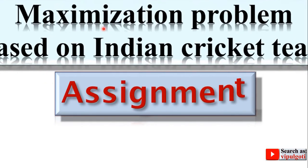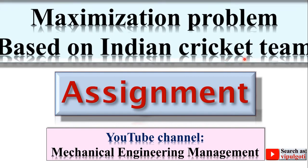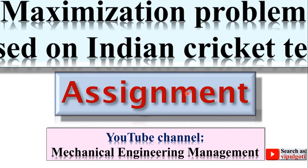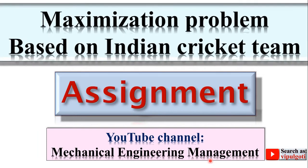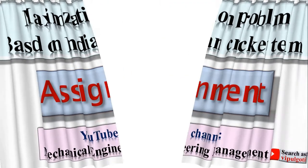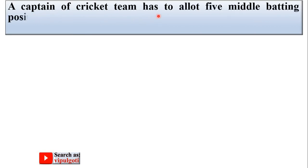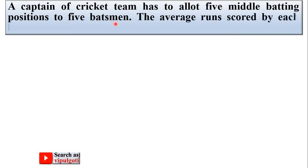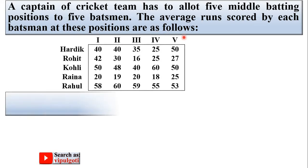Today we will discuss the maximization problem based on the Indian cricket team from the assignment chapter. Let's see first the description of the problem. A captain of a cricket team has to allot five middle batting positions to five batsmen. The average runs scored by each batsman at these positions are as follows.